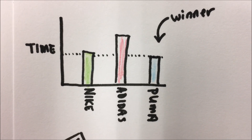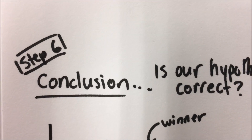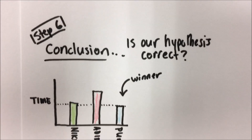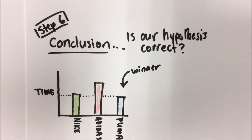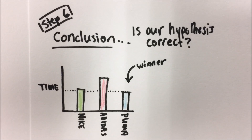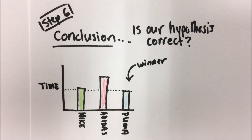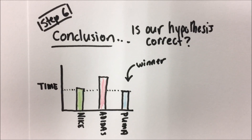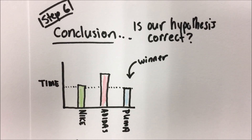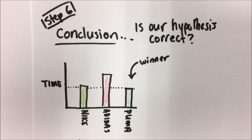Lastly, we want to go to our conclusion. Was our hypothesis correct? Was it that Nike gave us the fastest times? In this case our hypothesis was wrong — Puma gave us the fastest track times. In our conclusion we want to state whether our hypothesis was correct, why or why not, and what we could do to improve our experiment if we were to duplicate it.